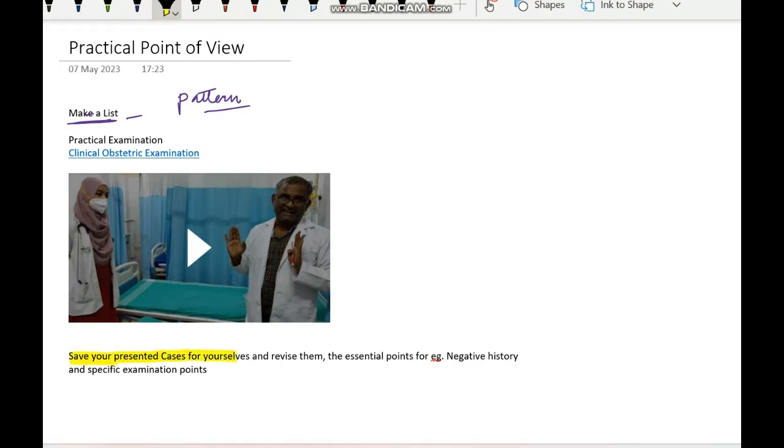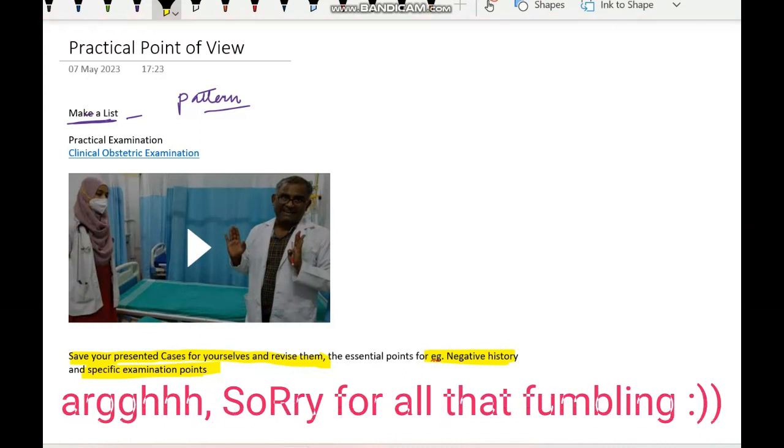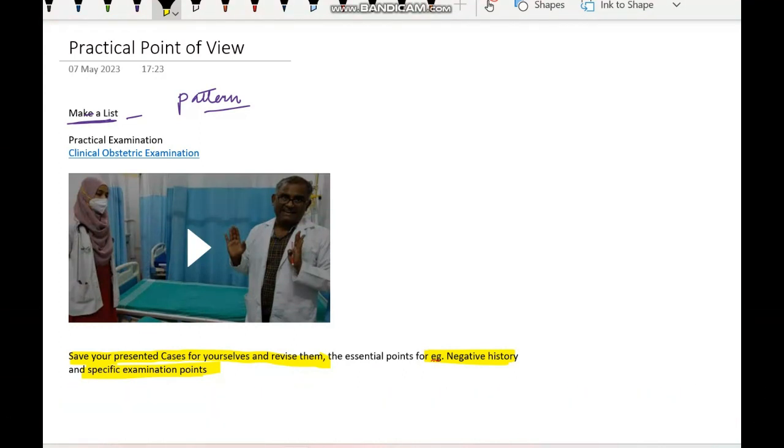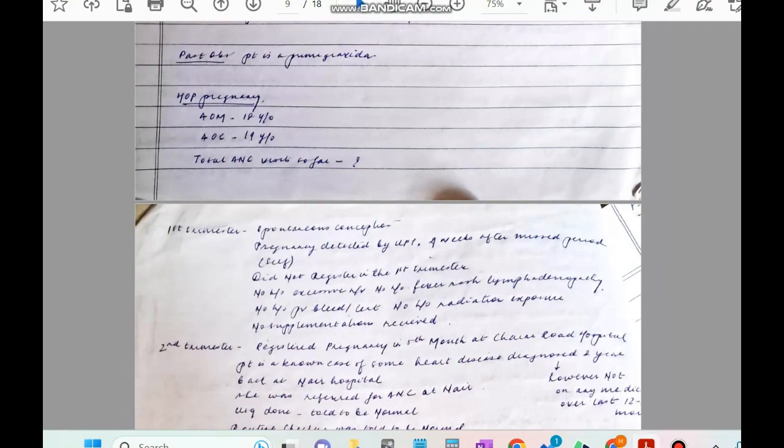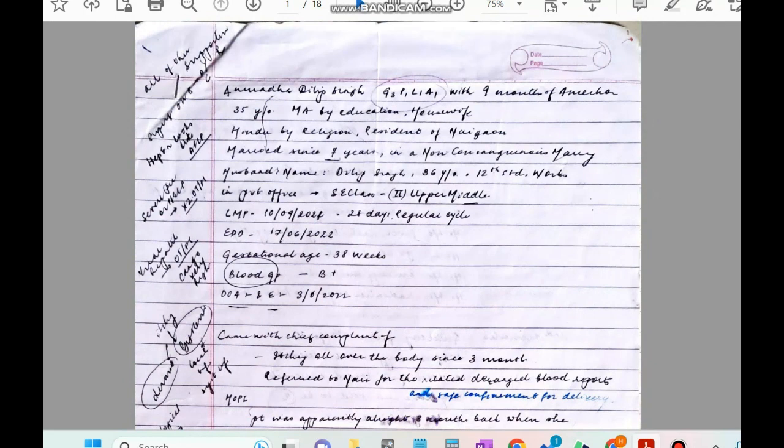One of my advices is also to save, write down, fair your presented cases for yourself and revise them towards the end before going to the examination. Because you can just highlight the essential points. For example, a negative history for one specific case like negative history for anemia or negative history of PIH, and what specific examination points go for these particular cases. For example, you have to look for edema in anemia. So those you forget in the anxiety of the examination. So it's very good if you can make your own mental notes of what has to be asked for and what has to be looked for in this specific case. So save your presented cases is my next advice. For your reference I can show a few of my cases which I had taken and I had saved for myself.